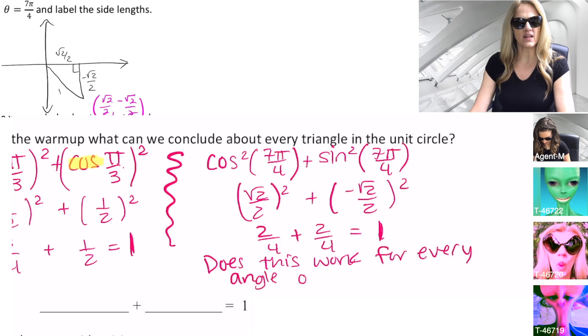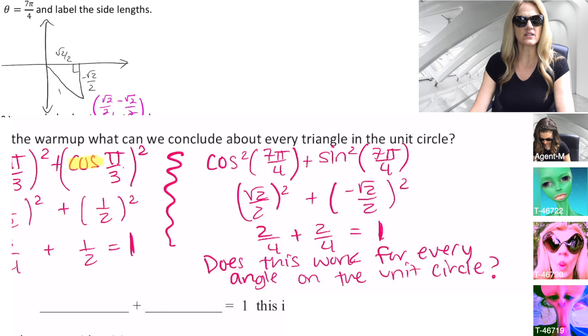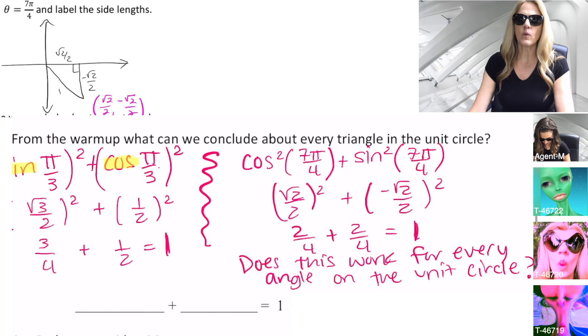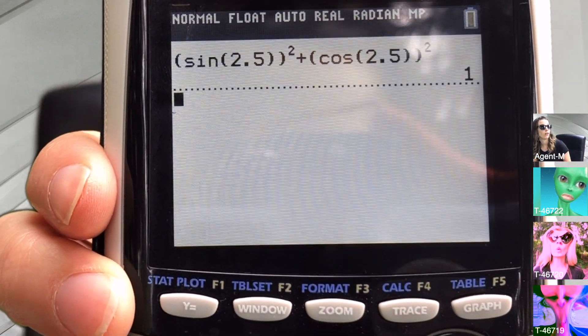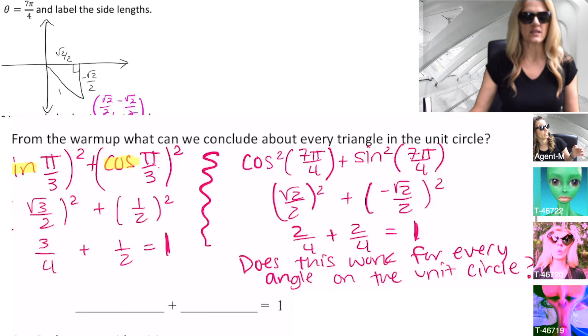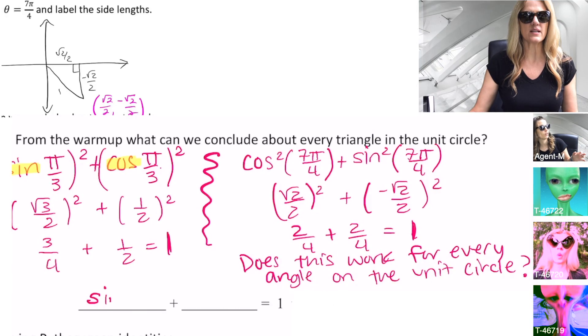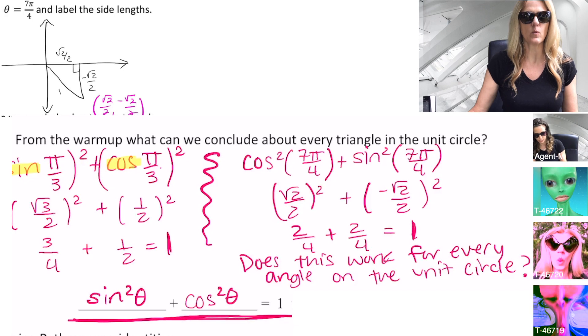We must show that this works for all values of theta. Given sin²θ + cos²θ, what if we were at 2.5 radians? Indeed, we have discovered another identity — these are the Pythagorean identities, and this is the beginning: sin²θ + cos²θ = 1. Yes, it always works. We can confirm that sin²θ + cos²θ = 1. This is yet another identity we would want to add to our handbook.